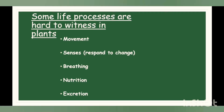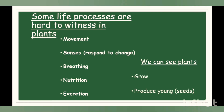If we talk about animals and humans, the life processes are quite easy to witness. But some of the life processes are hard to witness in plants, like movement, senses, breathing, nutrition and excretion — we cannot see them. We cannot see them move or breathe. So some students might think that plants are non-living. Let's discuss in detail how they can breathe, move, or have senses. There are also some life processes that we can see in plants easily — they can grow and produce young, which is in the form of seeds.